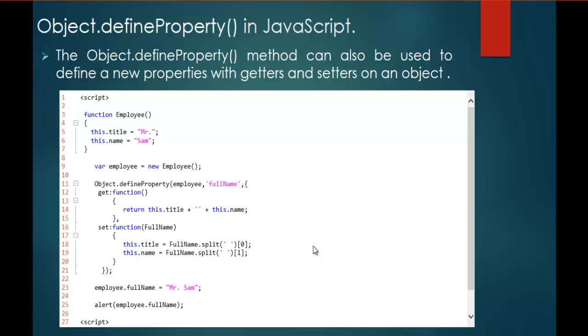So when I alert employee.fullname, the output I am going to get is 'MrSam'. This is how you can set and get values to a new property added using Object.defineProperty. Let me show you a demo of this — it is very simple.